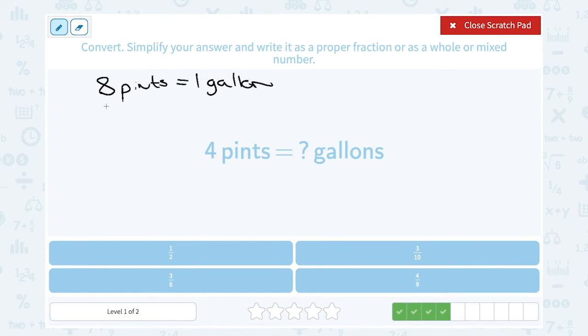So that means if I know my number of pints, I have to take however many pints I have and divide it by 8 to get to my number of gallons. So if I have 4 pints, 4 divided by 8, or 4 over 8, should tell me the number of gallons.